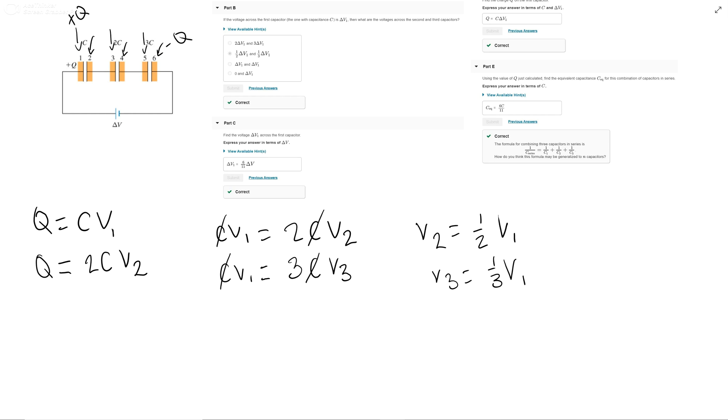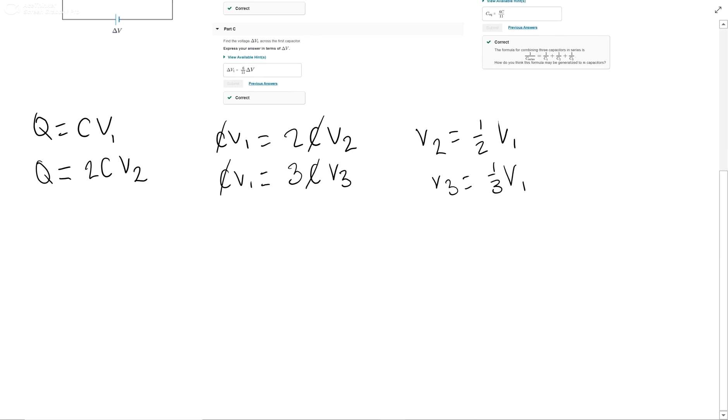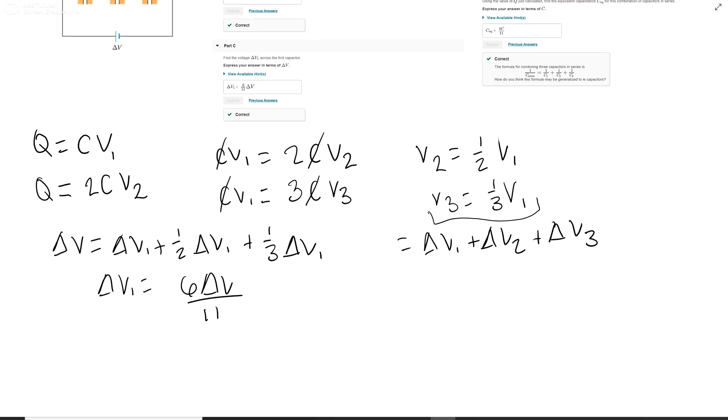Now part C is a whole other thing. So this one's asking us to find the voltage what is delta V1 equal to. So we know that in series, delta V is equal to delta V1 plus 1 half delta V1 plus 1 third delta V1. And this is actually equal to delta V1 plus delta V2 plus delta V3. But we of course already found what V2 and V3 are right here. So we will replace them and then just simplify this down to delta V1 is equal to 6 delta V over 11. Alright, so 6 delta V over 11, that is your part C answer.